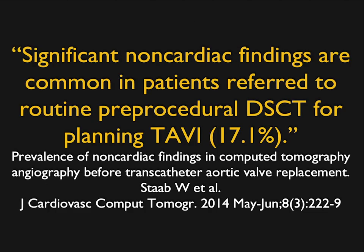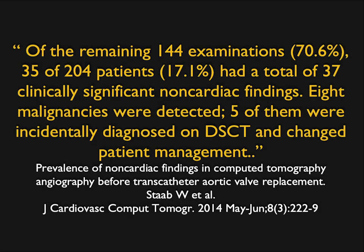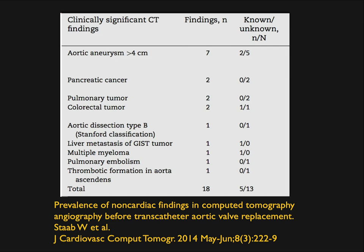In TAVR patients, 17.1% had incidental findings — not surprising since TAVR patients are typically over age 70. Findings included lung cancer, diverticulitis, effusions, and other cancers. So depending on the population, you're going to find more or less incidental findings. The older the population, the more incidental findings there are. In that article by Stav, you can see aneurysms, pancreatic cancer, and pulmonary and colon cancer among the findings.